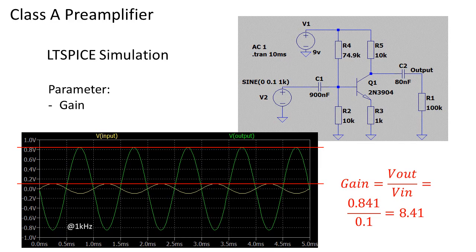Dividing the output amplitude with the input amplitude gives the gain of the circuit. In this case this is about 8.41 times, close to the calculated gain of 10.